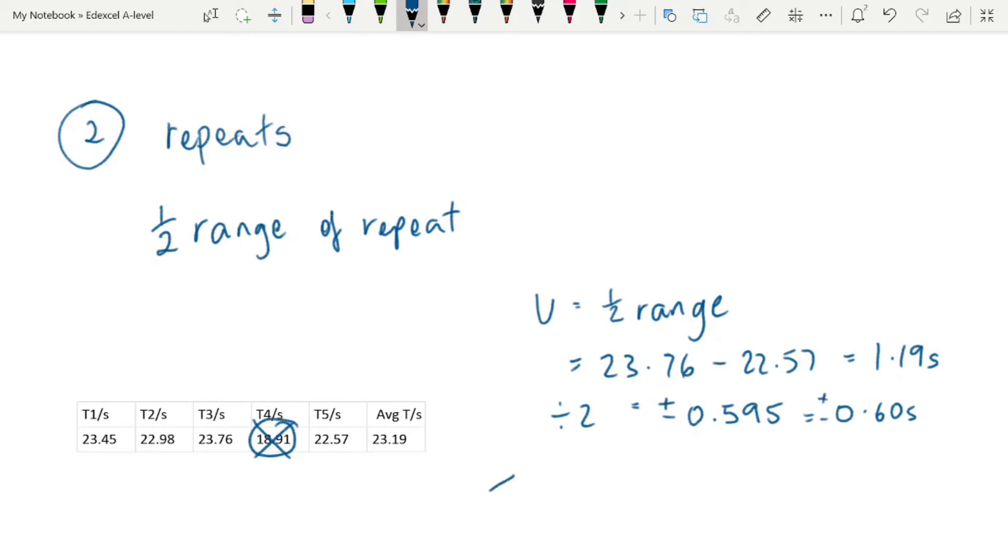We can then use that to calculate the percentage uncertainty in this data. 0.6 divided by the average number times 100, 2.59%.